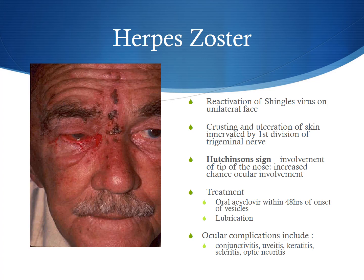Herpes zoster is another infection which involves reactivation of shingles on the unilateral side of the face. This can present as crusting and ulceration of the skin innervated by the first division of the trigeminal nerve. Oftentimes, this can also include the tip of the nose — a sign called Hutchinson sign, which is associated with an increased chance of ocular involvement because of shared nervous supply.